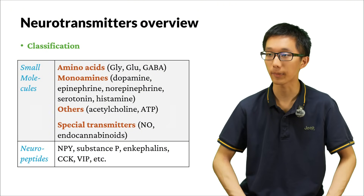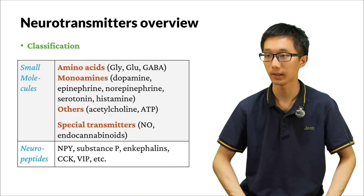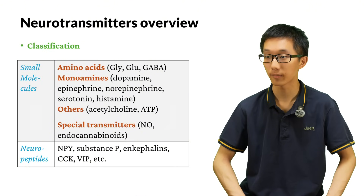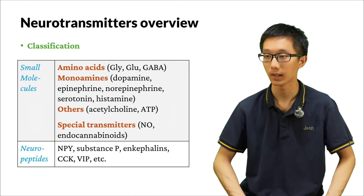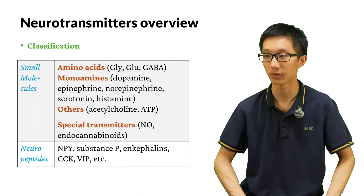The second type is monoamines, which include dopamine, epinephrine, norepinephrine, serotonin, histamine, and some others. The third type are other molecules, including acetylcholine and ATP. There are also some special neurotransmitters that are small molecules but do not exactly conform to the definition given above. These include nitrogen monoxide and endocannabinoids.